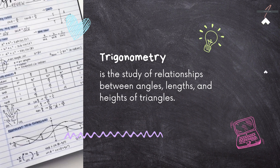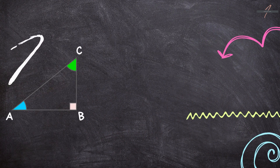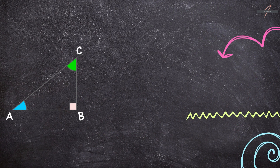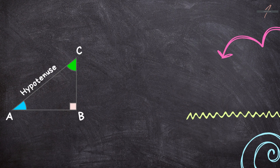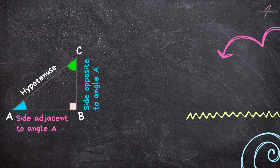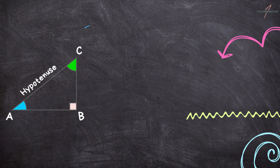Hope you are all set, so let's start. Refer to the triangle ABC shown here. It is a right angle triangle and angle A is an acute angle. Side AC is the hypotenuse, side BC is the side opposite to angle A, and side AB is adjacent to angle A. Now if we consider angle C in place of angle A, it would be something like this.